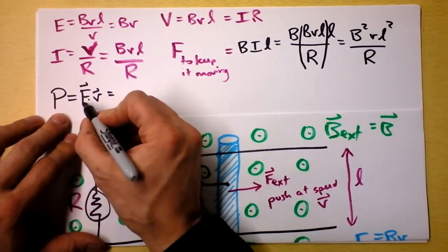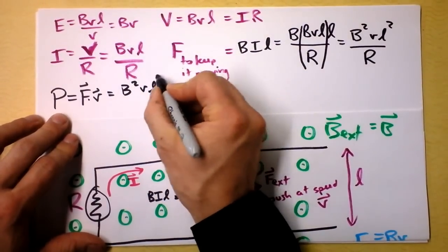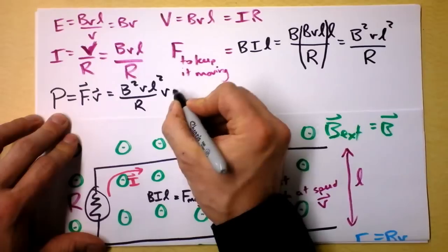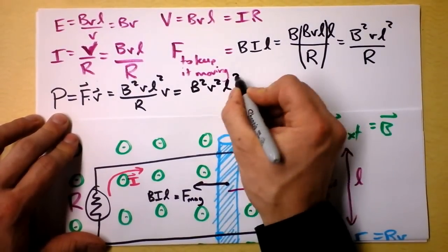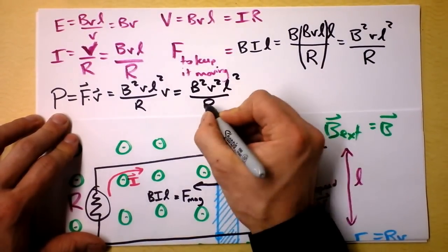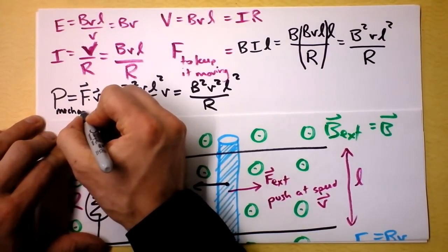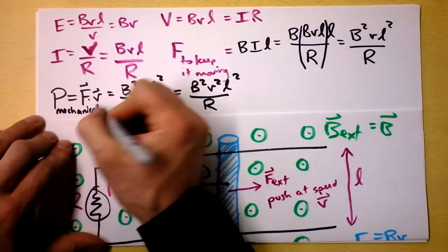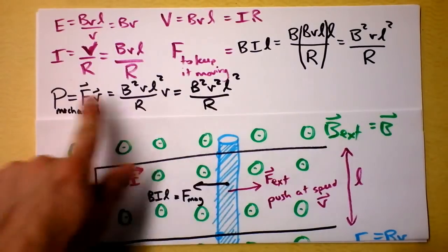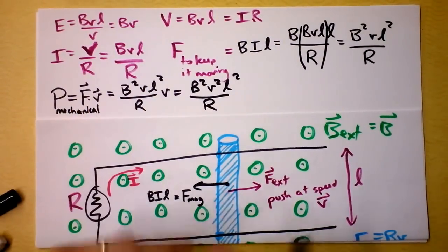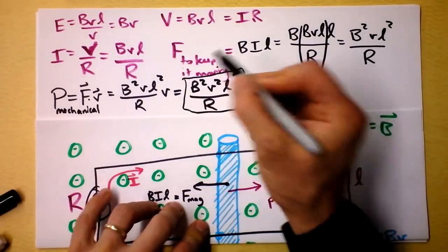We need to multiply that force by velocity. So I get B squared times V times L squared over R times V, which is B squared times V squared times L squared divided by R. That is the mechanical power. The mechanical power is the mechanical force that we have to use to keep it moving times the speed at which we're moving it, and that's the number that we get. Got a whole bunch of square stuff in the numerator.